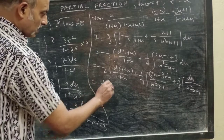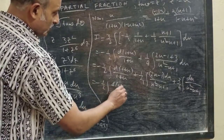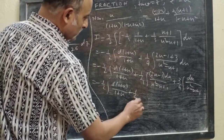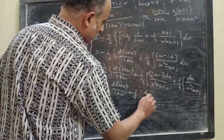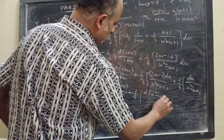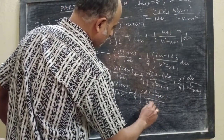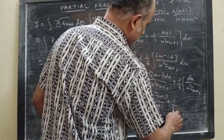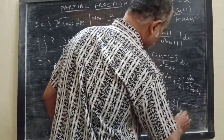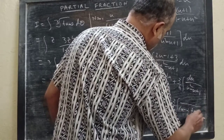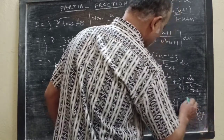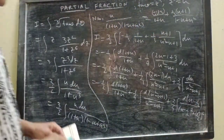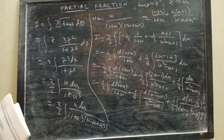Then −(1/2) ∫ d(1+u), plus (2u − 1)/(u² − u + 1), plus (3/4), completing the square: (u − 1/2)² + (√3/2)², which is d(u − 1/2). Now totally integrable.